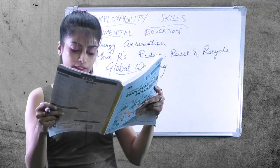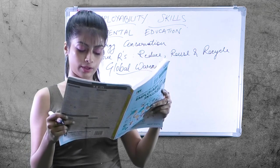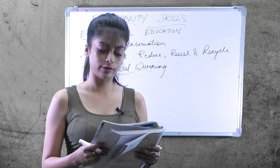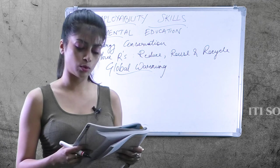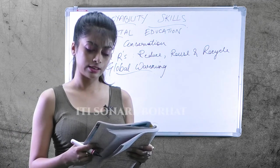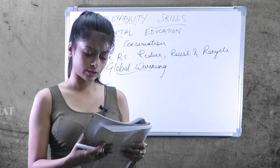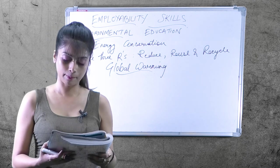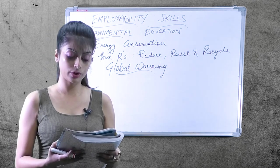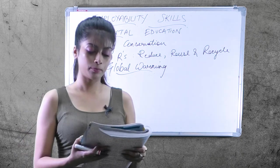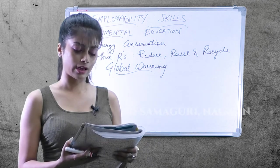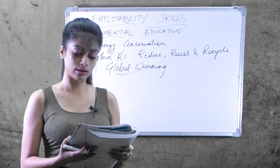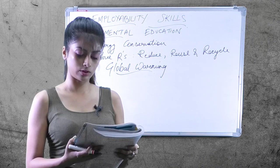The ozone depletion process begins with CFCs and other ozone-depleting substances (ODS) emitted into the atmosphere. Wind distributes these gases through the troposphere. Strong UV light breaks the ODS molecule apart — CFCs, HCFCs, carbon tetrachloride, and methyl chloroform release chlorine atoms, while halons and methyl bromide release bromine atoms. It is these atoms that actually destroy ozone, not the intact ODS molecule. It is estimated that one chlorine atom can destroy over 100,000 ozone molecules before it is removed from the stratosphere.